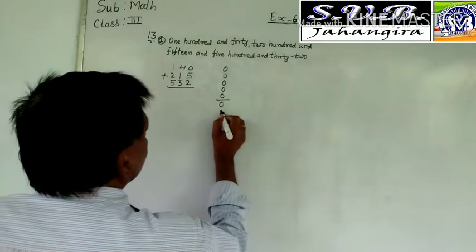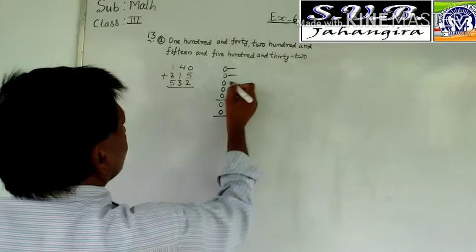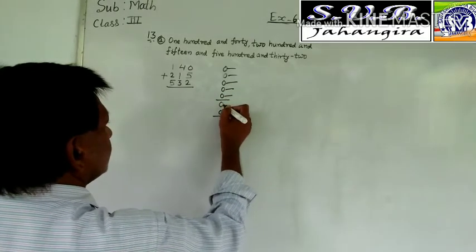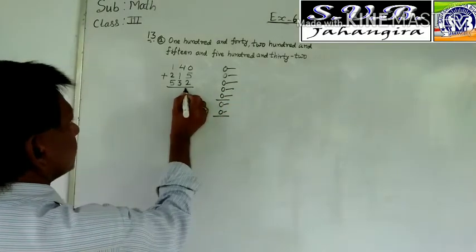Aap do, do, do, teen, chaar, paanch, chhah, saat, seven likh dete hai.